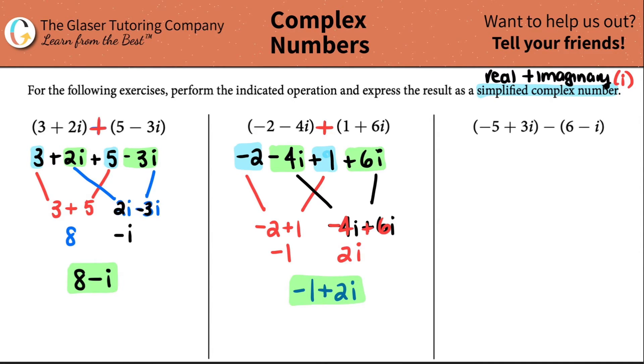Last one: negative 5 plus 3i minus 6 minus i. It's a negative, right? We're not multiplying, so do we really need these parentheses? No. But for this negatives or minus, there's a little trick. The first part is going to be exactly the same, so negative 5 plus 3i.